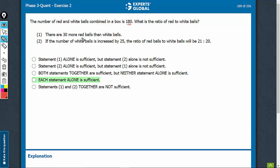Total is 180, 30 more red balls than white balls. So white, let's say, is W, then red R is W plus 30. 30 more, total is 180.